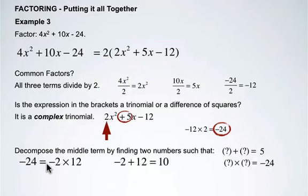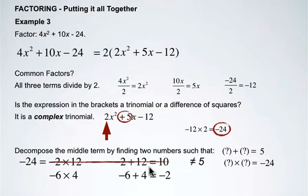The factors of negative 24 are negative 2 times 12, but that will give us 10 not 5. Negative 6 times 4, when you add those together we'll get negative 2. It's not equal to 5.